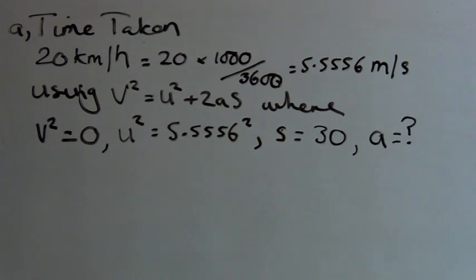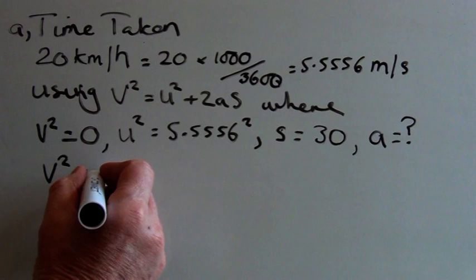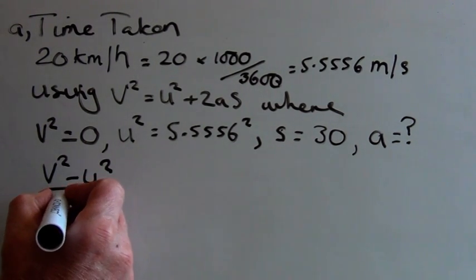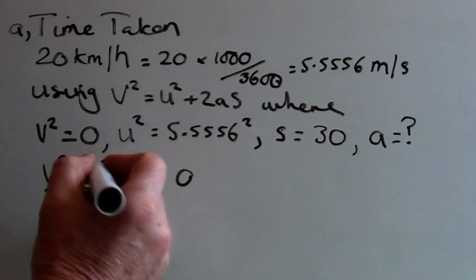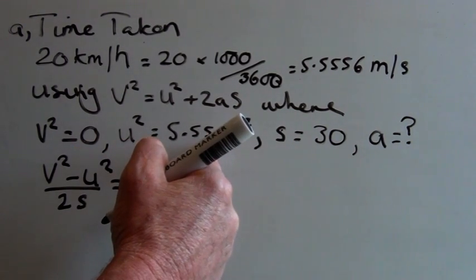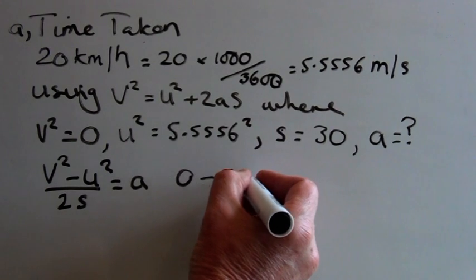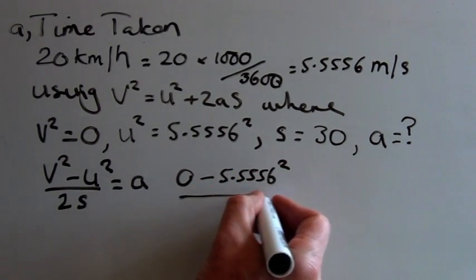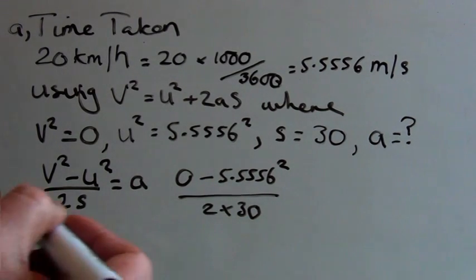So let's rearrange this equation to give us a. We end up with v squared minus u squared divided by 2s equals a. Now v squared is the initial velocity which is 0, so we can say 0 minus u squared, which is 5.5556 squared, divided by 2 times s, which is 30, equals a.